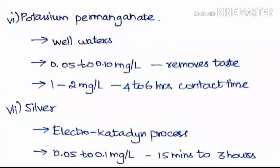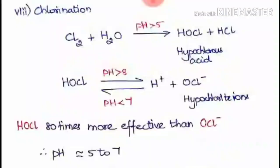The next method is silver. Silver is created by the electro-catadine process. With the help of electricity, silver ions are produced and then treated with the water. A dosage of nearly 0.05 to 2.1 mg/L is given with a contact time of 15 minutes to 3 hours.